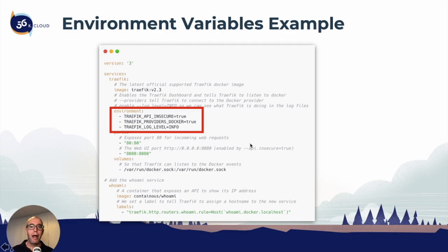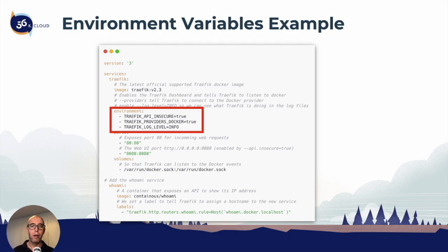I have some examples in the section two 'Configure Traefik' folder. In the GitHub repo, you can look at the command line versus environment variable examples. We'll run through this in the lab and look at the different options available between the configuration file, the command line, and environment variables. Join me in the next section as we start using these in the lab.